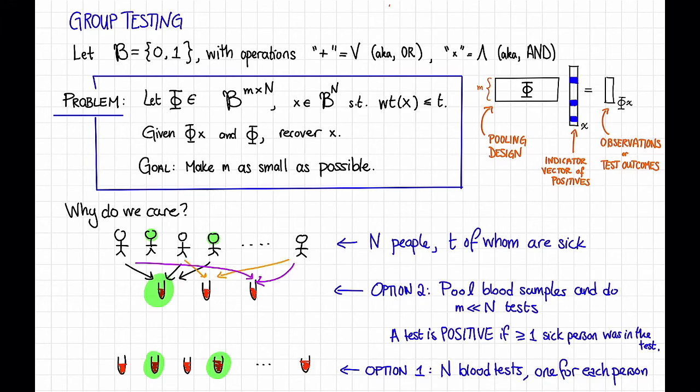Note that there are only two possible outcomes for a test, positive or negative. So if lots of sick people participate in a test, it doesn't get super positive or anything like that. It's just one bit, positive or negative.